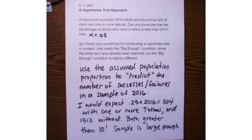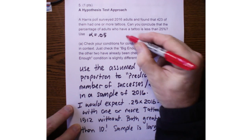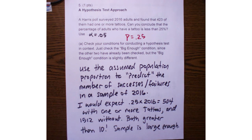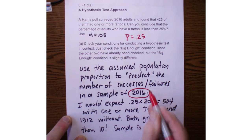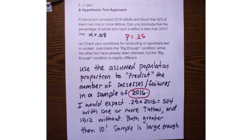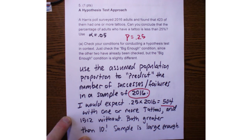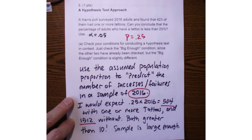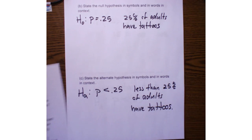When we check the big enough condition, we want to use the population proportion that we're assuming to be true. In this case, the population proportion we are assuming to be true is 0.25. So based upon a population proportion of 0.25, how many tattooed adults would I expect to see in a sample of size 2016? I would expect to see 504 adults with one or more tattoos and 1,512 adults without. Both of those are greater than 10, so my big enough sample is met. The sample is large enough to continue on and use a normal model.